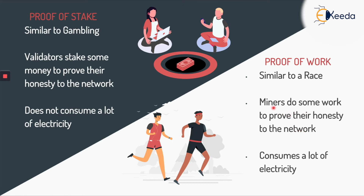What is the penalty? The penalty is that they spend electricity. They do not want to lose that electricity for nothing, and that is the reason why they will not be hackers most of the time. So that is the proof of work mechanism.